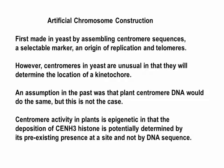The whole concept of artificial chromosomes originated in yeast some decades ago. That was performed by taking centromere sequences, a selectable marker, an origin of replication, capped off by the ends of chromosomes called telomeres. However, this approach has often been thought applicable to plants, but the centromeres in yeast are unusual in that they actually determine where the kinetochore—that part of a chromosome involved in chromosome movement—is located.